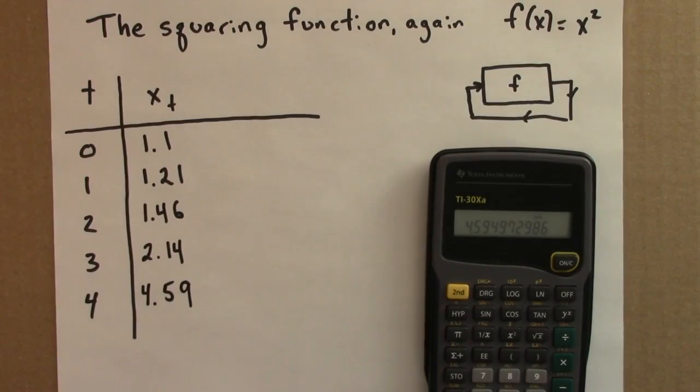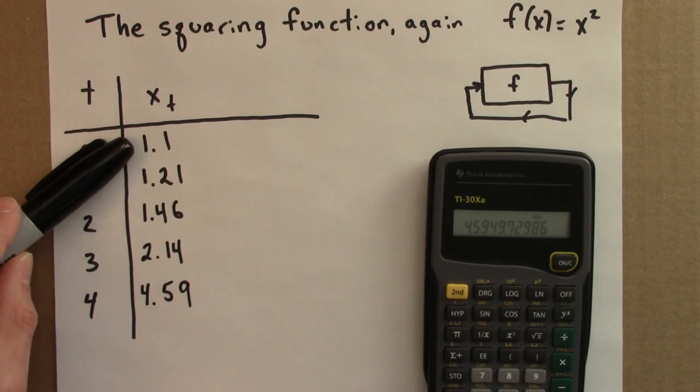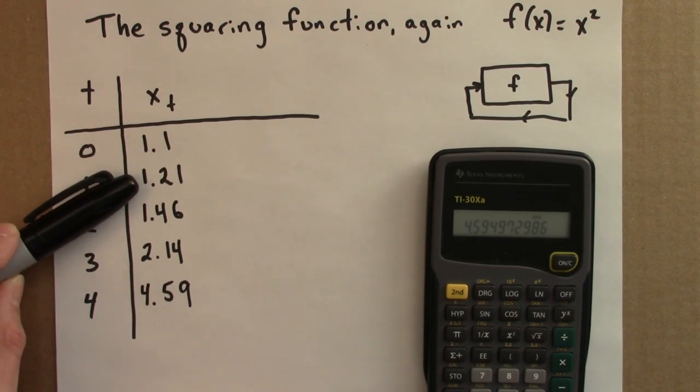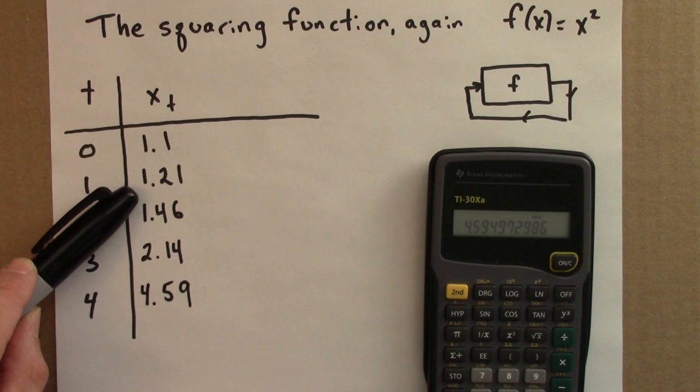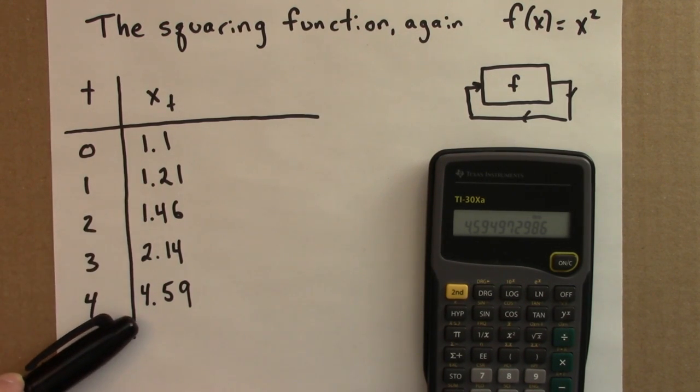Let's start with an example. We'll consider again the squaring function, f(x) equals x squared. We know how to calculate an orbit for this function. We just start with a number, the seed. In this case, I chose 1.1. And then we square to get the next iterate, 1.21. We square that to get 1.46, and so on.